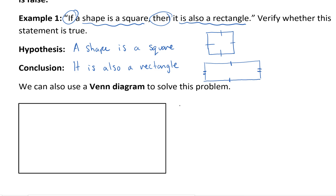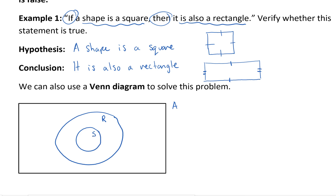If I use A as the universal set, and R for the set of rectangles, then a subset of that would be S, because squares are special cases of rectangles. Is a square a rectangle? Yes — it's got four sides, opposite sides are equal, but it's a special case where all four sides are equal. There's no way that a rectangle can be a square. So S is a subset of R, which is a subset of A. That's a visual.